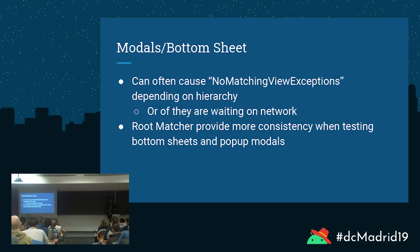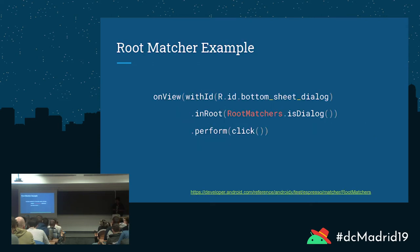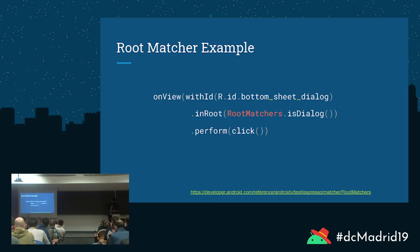For modals and bottom sheets, you'll normally get a 'no matching view' exception because it's a view above a view. To get around that, one way is to use a root matcher — it provides more consistency while testing, is more stable, and works well with bottom sheets and popup modals. Here's an example: this looks for a bottom sheet dialog, checks for a dialog, and performs an action. Without root matchers, you might have to use a Hamcrest matcher, passing multiple parameters like view with this ID, this content description, and this text — essentially passing multiple parameters to verify an element is on screen.